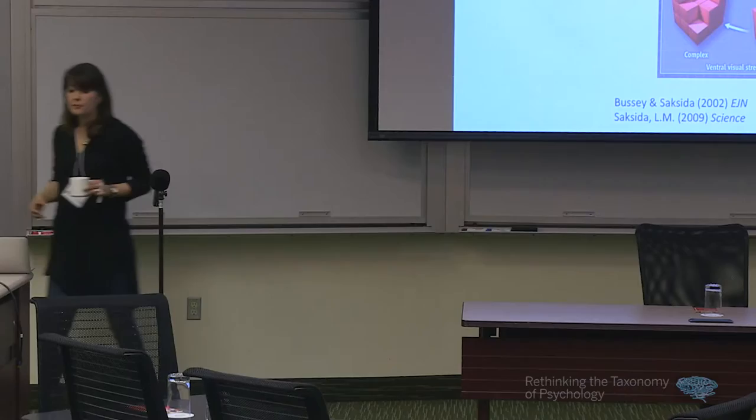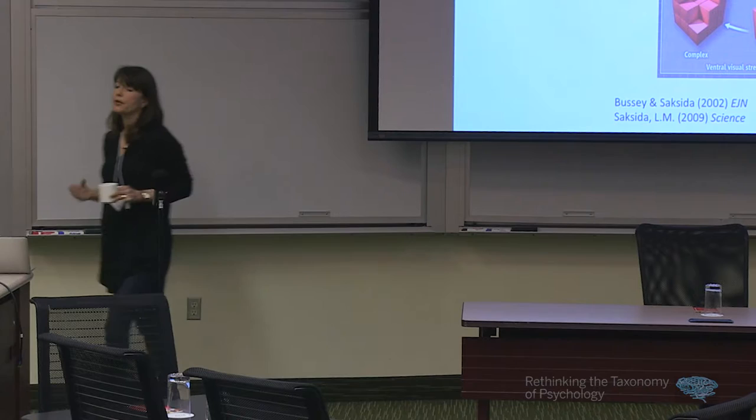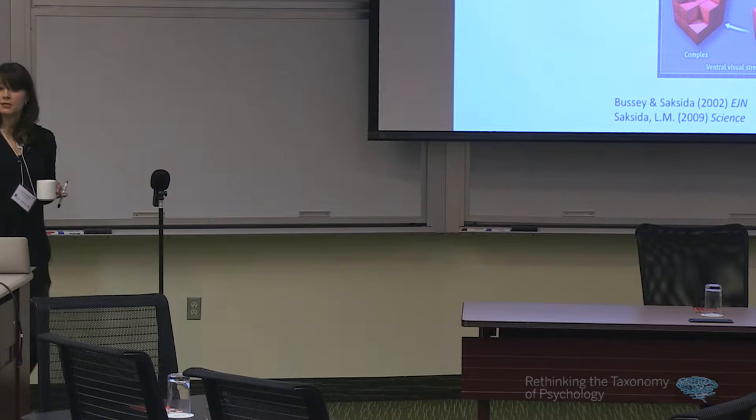At the time we started this work, Bob Desimone was beginning to record from neurons in perirhinal cortex — part of the medial temporal lobe memory system — and finding that perirhinal cortex neurons actually respond to very complex conjunctions of features and stimuli: things like objects. What we started to think about was that this representational continuum extends into the medial temporal lobe, and it's not the processing that's different but the representations. Maybe structures within the medial temporal lobe are not important just for declarative memory, but for any type of cognitive task that requires the representations maintained there — these complex stimulus representations.